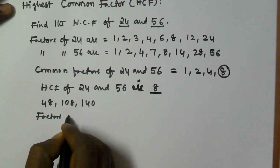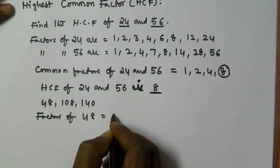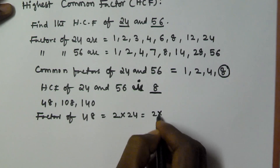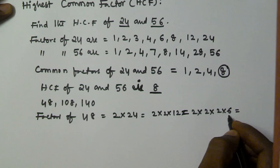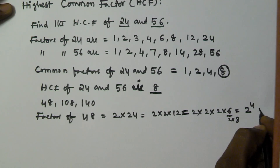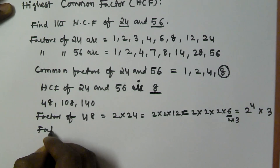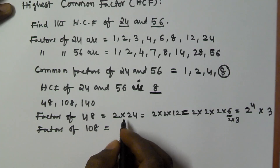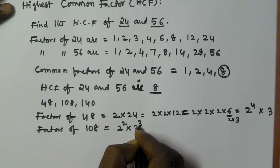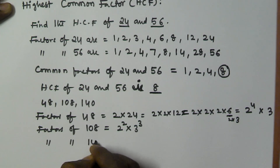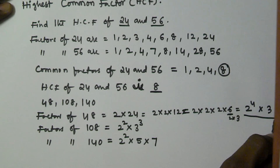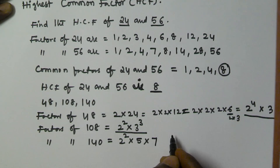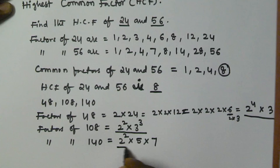Using the factors method, we express each number as a product of prime factors. The factors of 48 give us 2 to the power of 4 times 3. The factors of 108 give us 2 squared times 3 cubed. The factors of 140 give us 2 squared times 5 times 7.